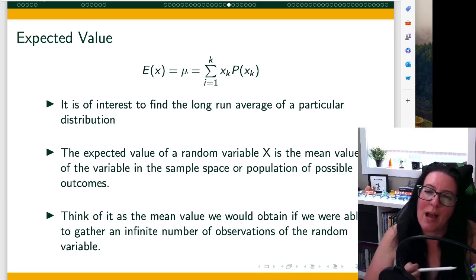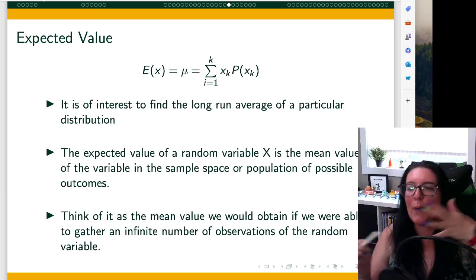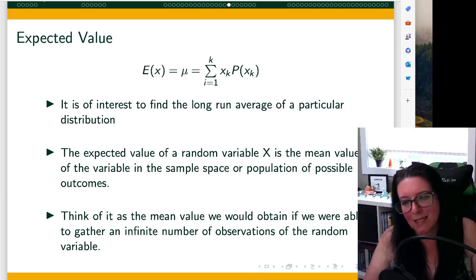The probability of each outcome occurring times the value of the outcome, and we add them all up, we get the average, the expected value.